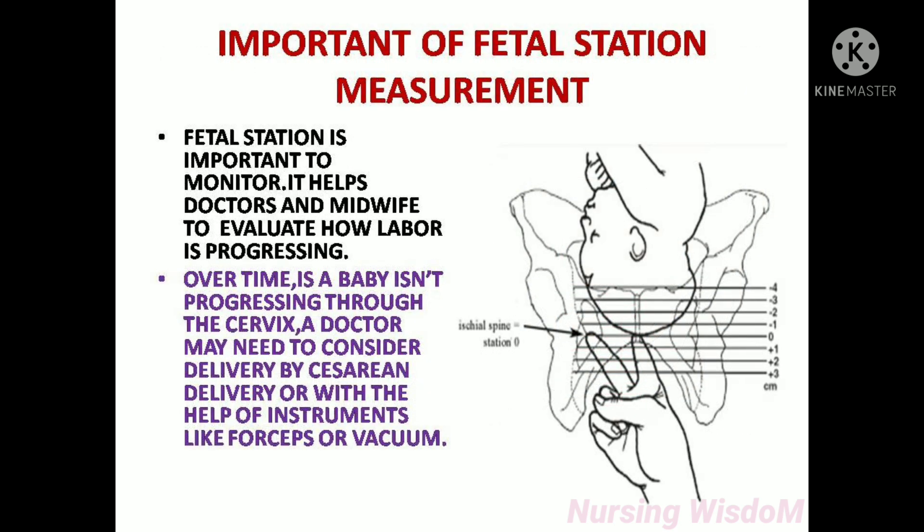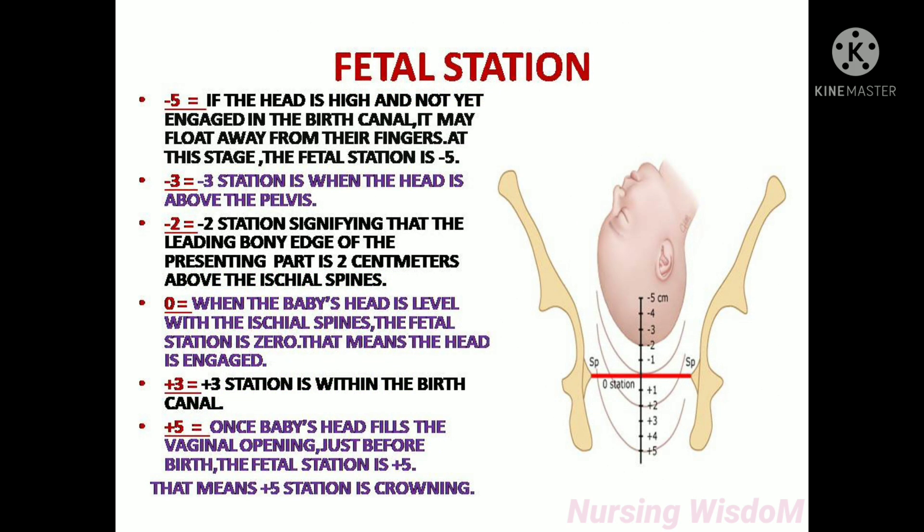Fetal station measurement is important to monitor because it helps doctors and midwives evaluate how labor is progressing over time. If a baby is not progressing through the cervix, a doctor may need to consider delivery by caesarean section or with the help of instruments like forceps or vacuum.